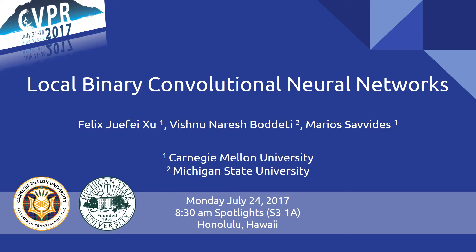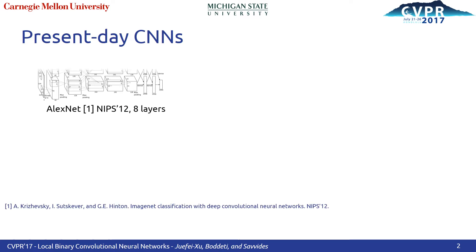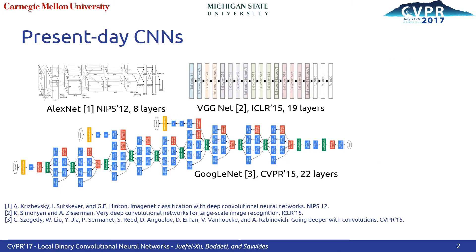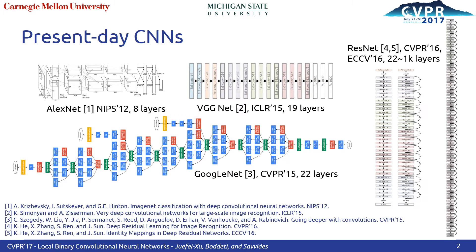CNNs are overwhelmingly powerful with abundant training data and abundant computation resources. But what about training CNN models in resource-constrained environments, where the resource being constrained is data or computational resources?